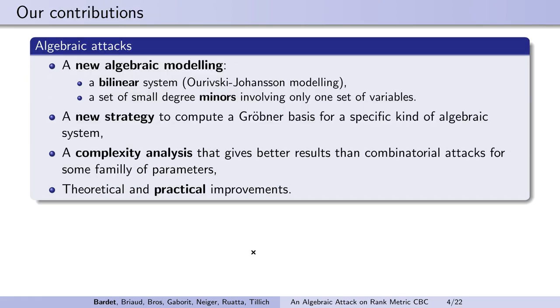Our contributions in this paper concern algebraic attacks to solve the decoding problem in rank metric. An algebraic modeling is a set of equations whose solution is the error we are looking for. We start from the modeling from Gaborit and Ruatta, which is a set of bilinear equations depending on two blocks of variables, and we add to it a new set of minors of a particular matrix that are of rather small degree and involve only one of the two blocks of variables.